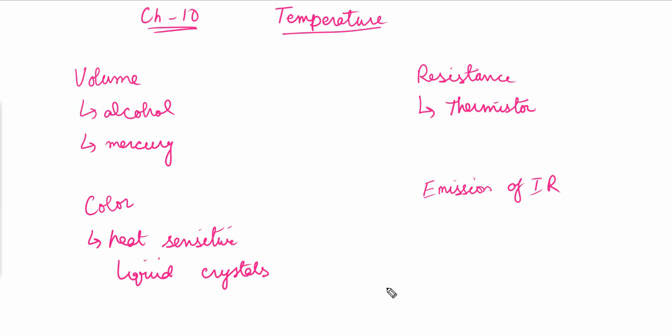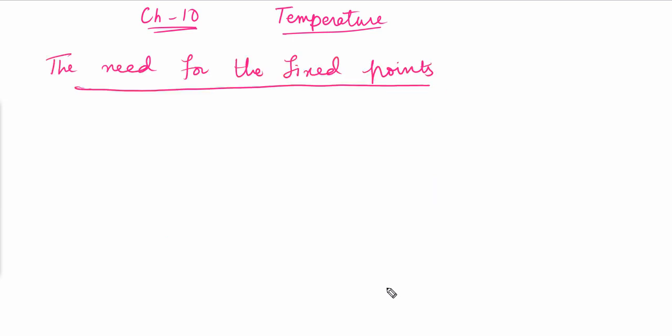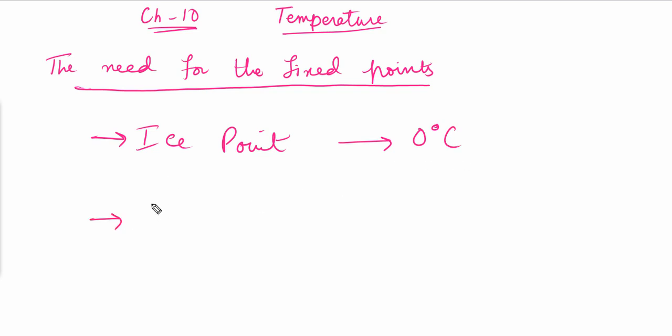Now we have to discuss the need for fixed points — why do we need fixed points to measure temperature? We need fixed points to set a reference point for temperature. For example, we can fix a point as the melting point of ice, called the ice point. The temperature at which ice melts is zero degrees Celsius.